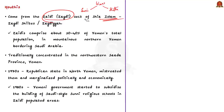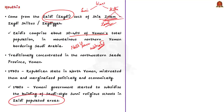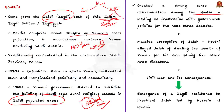Coming to Yemen, the Zaydi population is significant — they comprise around 30 to 40 percent of Yemen's population. The issue started in the 1970s when the North Yemen government marginalized Zaydis both politically and economically. For example, the government started subsidizing the building of Saudi-style Sunni religious schools in Zaydi populated areas. Since Shiites and Sunnis are arch enemies in West Asia, this created a strong sense of discrimination among the Houthis, and they grew increasingly frustrated with government policies over the next three decades.